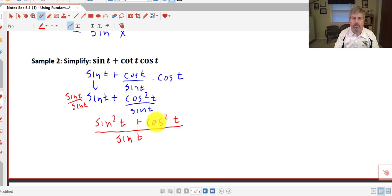I have sine squared t plus cosine squared t all over my common denominator of sine of t. And, of course, sine squared t plus cosine squared t is 1. So I have 1 over the sine of t. And using our reciprocal functions, that is the cosecant of t. So our final answer here, simplified version, is cosecant t.